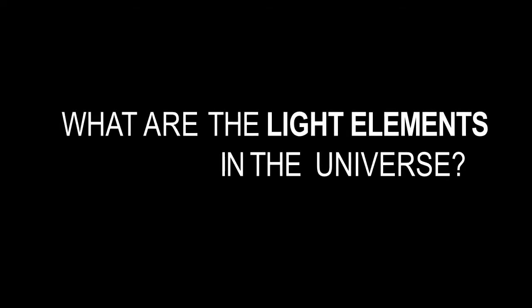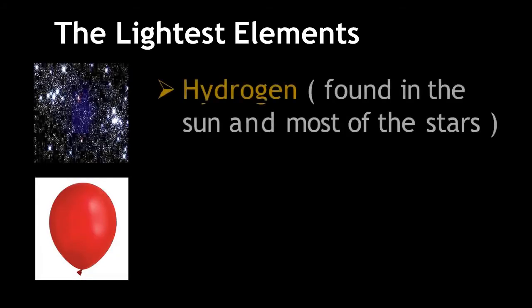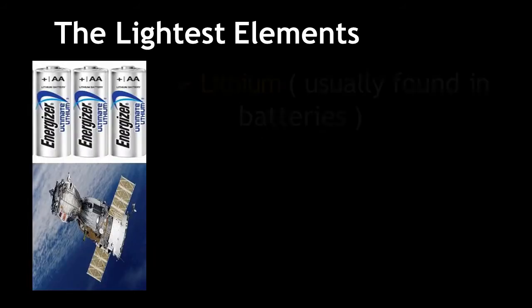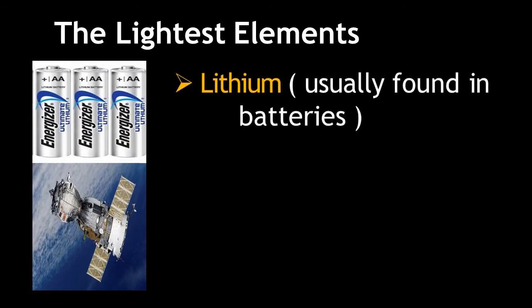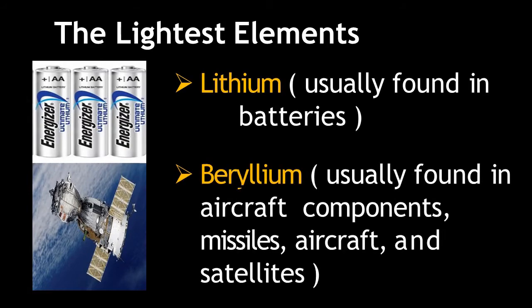What are the light elements in the universe? Hydrogen, it is found in the sun and most of the stars. Helium, it is usually used to inflate balloons. Lithium, usually found in batteries. Beryllium, usually found in aircraft components, missiles, aircraft, and satellites.